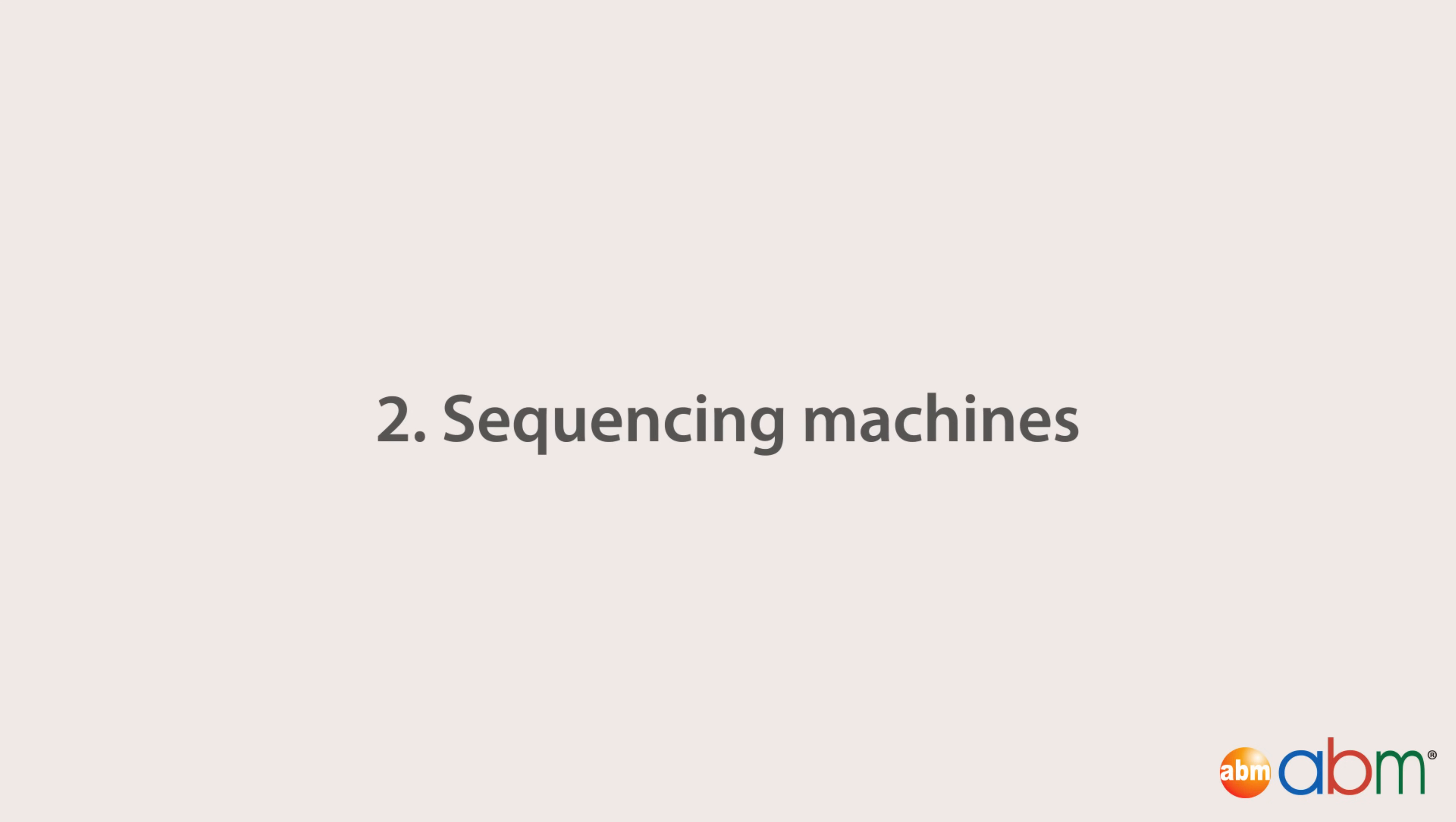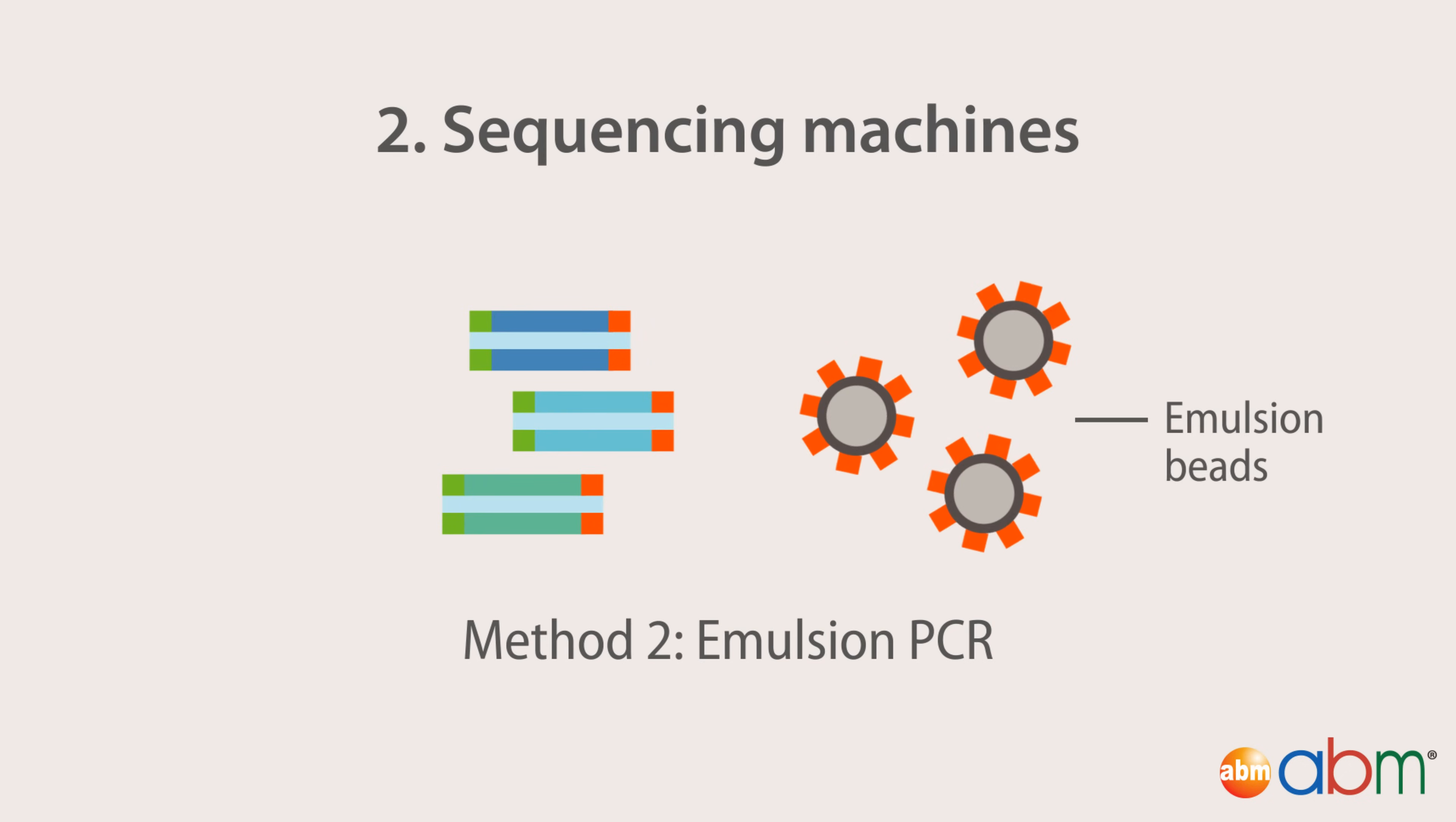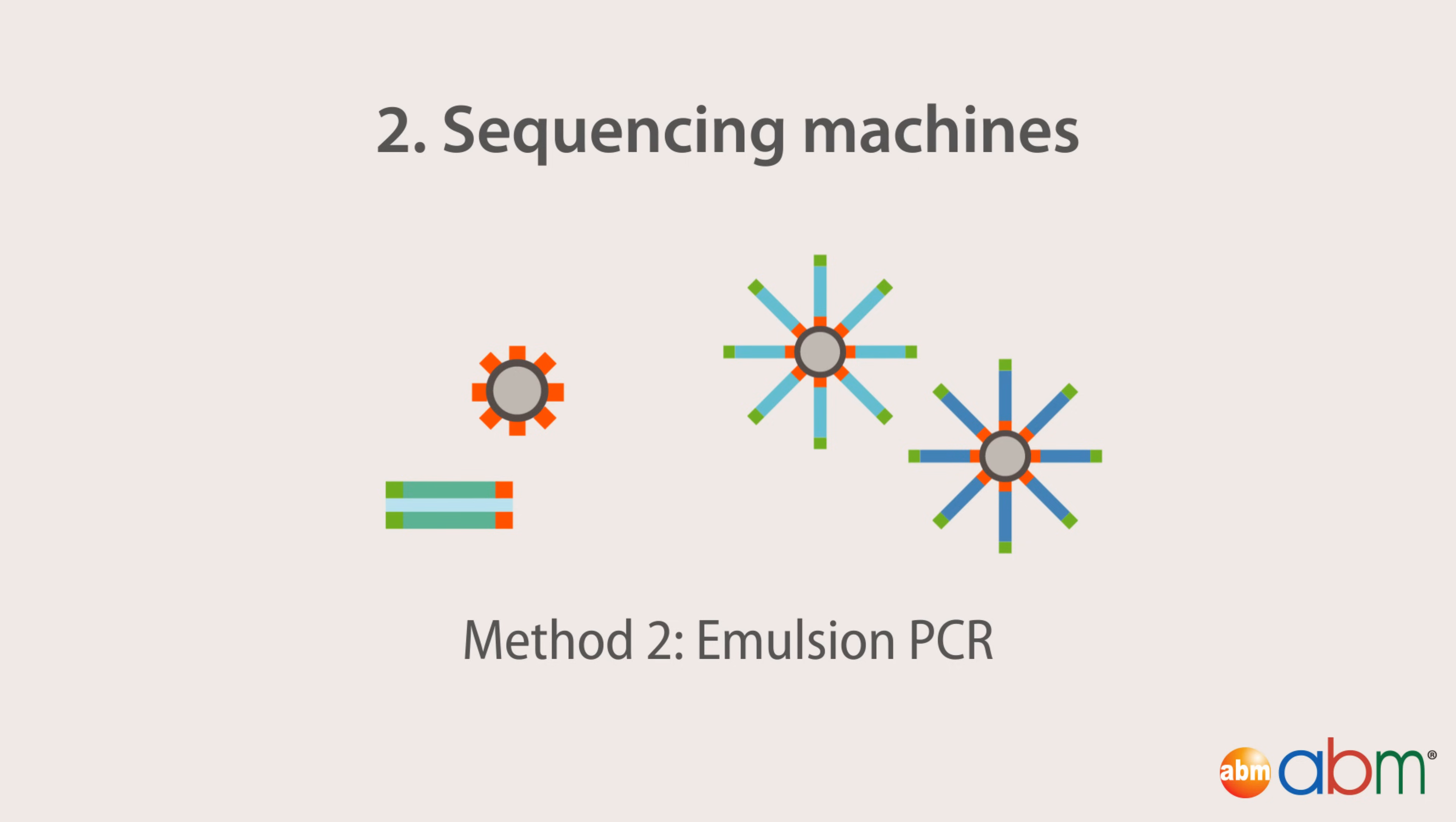2. Sequencing machines. Each library fragment is amplified on a solid surface with covalently attached DNA linkers that hybridize the library adapters. This amplification creates clusters of DNA, each originating from a single library fragment. Each cluster will act as an individual sequencing reaction.